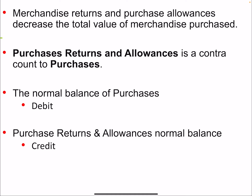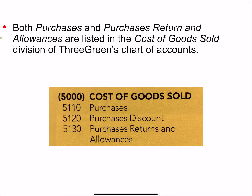You record all merchandise purchased in your purchases account. If you return some, you keep it in a separate account, and eventually it reduces the total amount of purchases. Both purchases and purchase return and allowance are listed in the cost of goods sold division of Three Green's chart of accounts, alongside purchases and purchase discount.